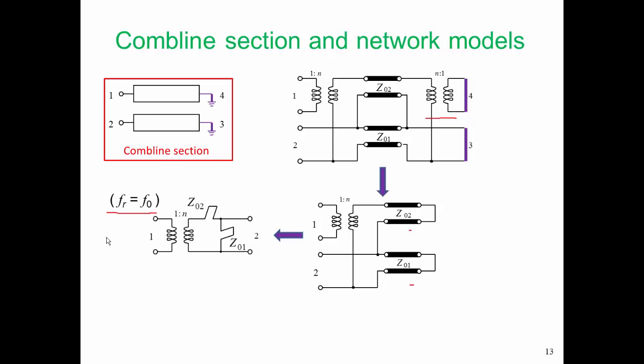We can go one step further. There is an equivalence for this transformer with a stub. Using that equivalence, we come up with a pi arrangement of stubs here. Three shorted stubs, two in shunt, one in series, and they are resonant at the center frequency of our equivalent circuit.